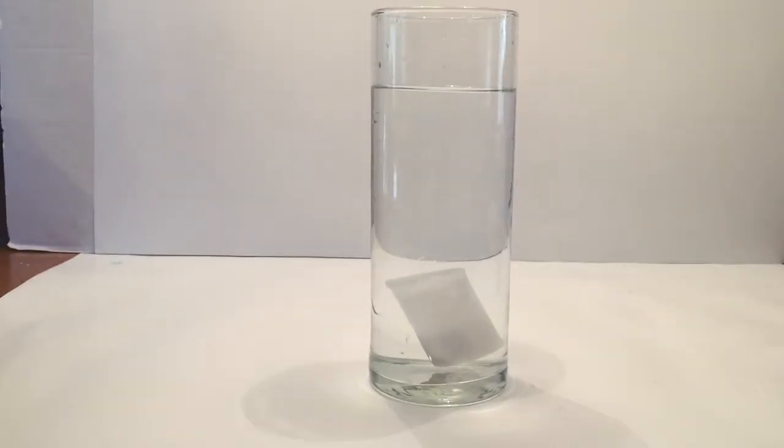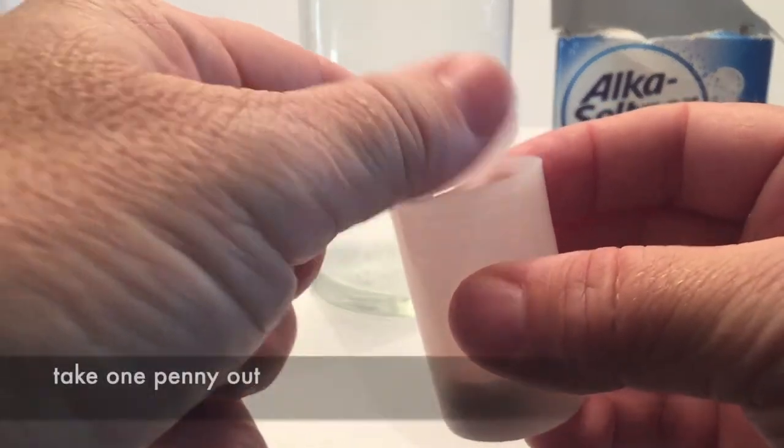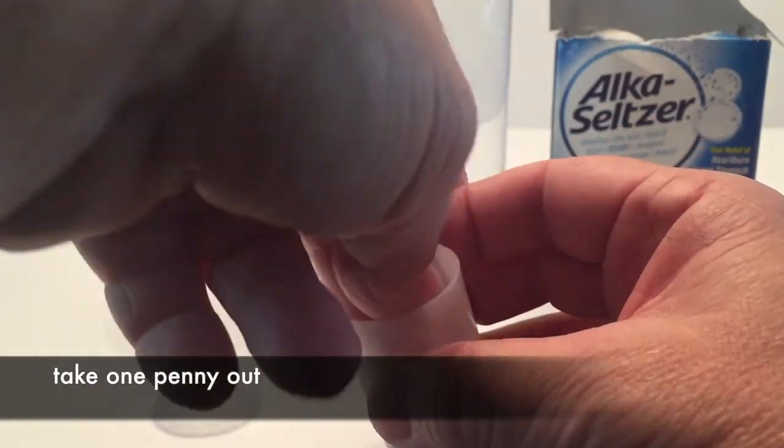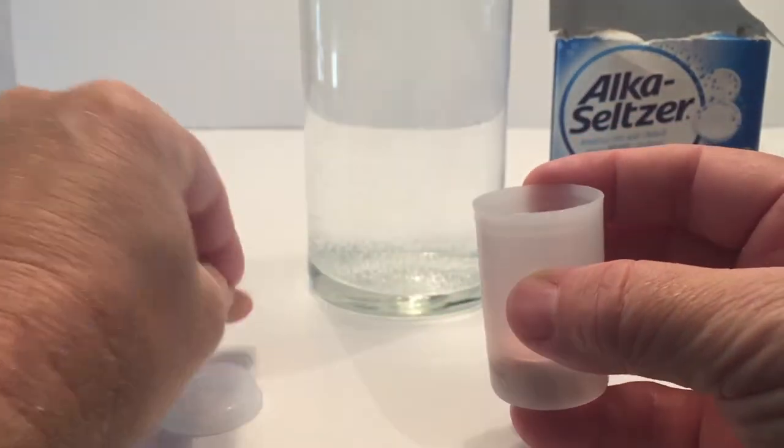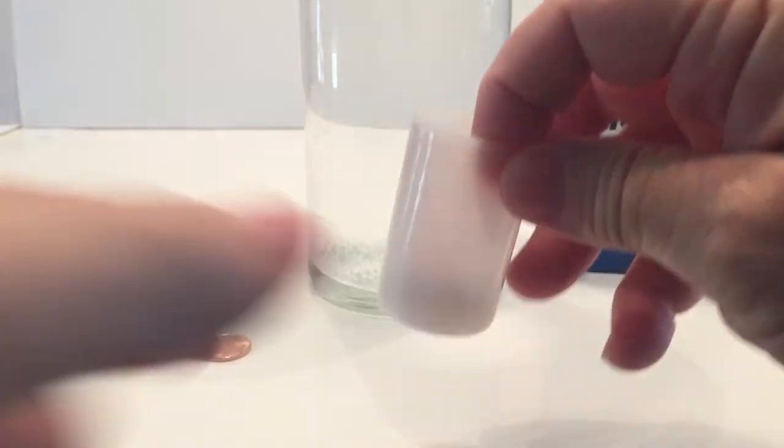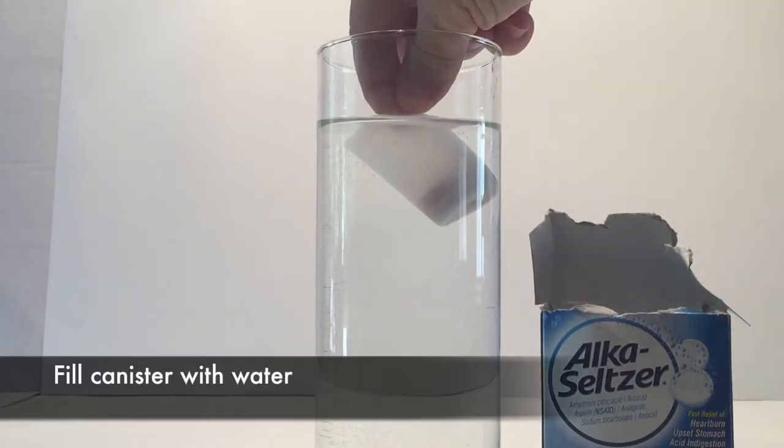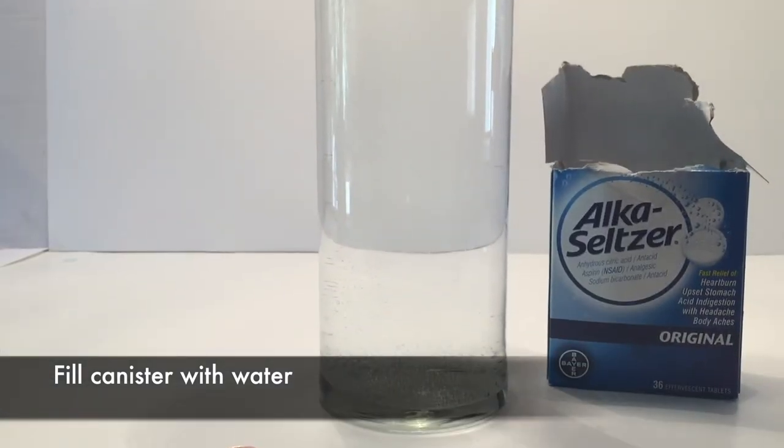And once you get to this point, then you're going to pull it out and remove one of the coins. So I'm taking one coin out, so I'm back down to 12 now. And then what I'm going to do is fill the canister up with water, almost to the top.